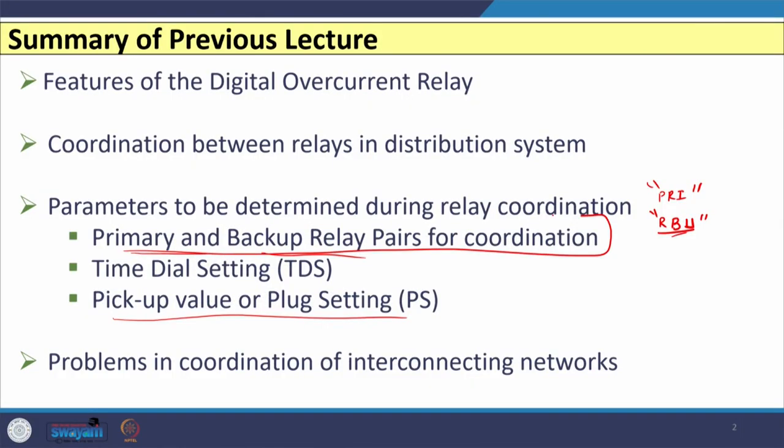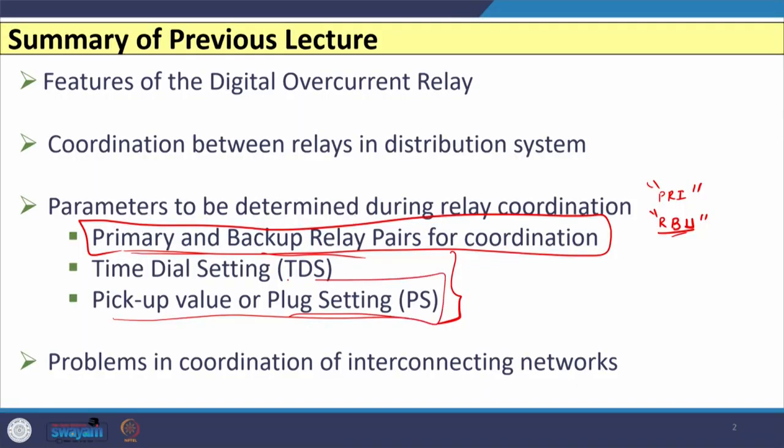The first output is the primary and backup relay pairs (PRI and RBU). The second is the time dial setting, and the third is the pickup or plug setting of the relay. The link net structure gives only the primary and backup relay pairs. The remaining two settings — time dial and plug setting — require load flow studies to establish initial conditions and short circuit studies for time dial calculations, while plug settings are based on full load current with a percentage of overload.